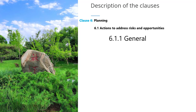Under subclass 6.1 there are four further subclasses. Clause 6.1.1 is a general clause related to planning for actions to address risks and opportunities. It requires that the organization must consider their context — i.e., risk profile, the needs and expectations of workers and other interested parties, and the scope of the OHS management system — when determining the risks and opportunities that may influence the performance of their OHS management system or its intended outcomes.